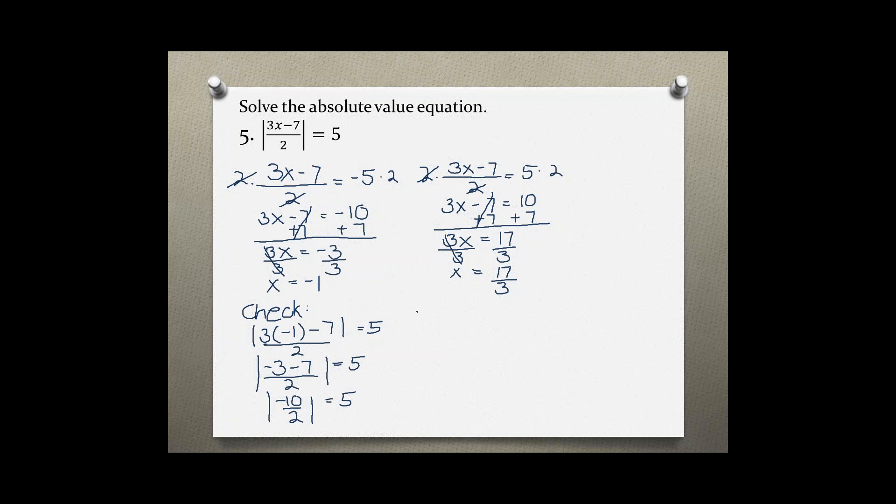And negative 10 divided by 2 is negative 5 is equal to 5. The absolute value of negative 5 is always positive, so 5 is equal to 5.